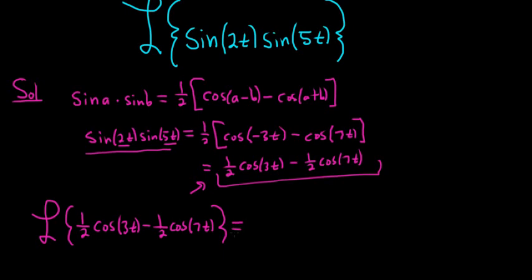This is equal to, so you can break it up into two different pieces. This is 1/2 Laplace transform of cosine 3t minus 1/2 Laplace transform of cosine 7t.